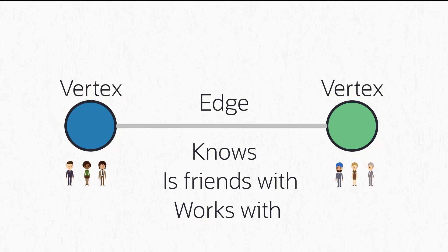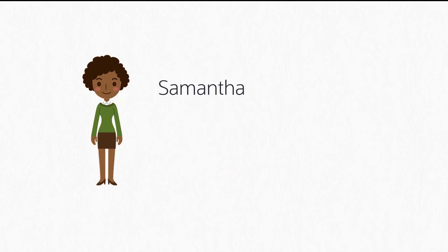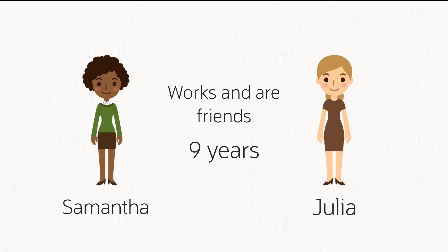Both vertices and edges contain properties. For example, for people, we can have name, age, gender, and occupation as properties. Here, we can see how Samantha has been working and is friends with Julia for nine years. The nine years represent a property of the edge.